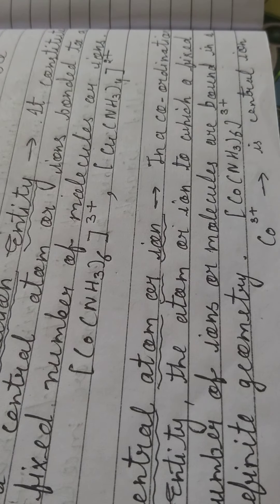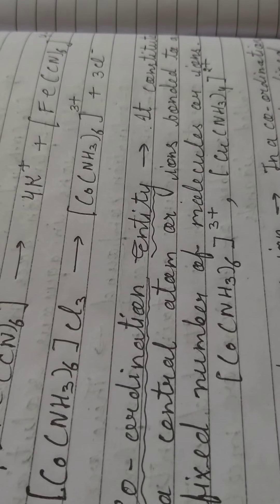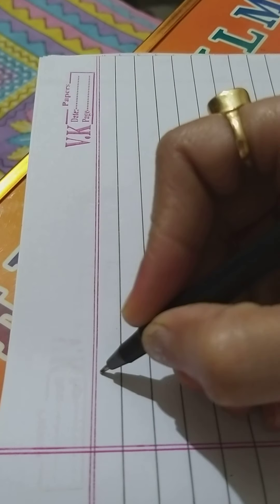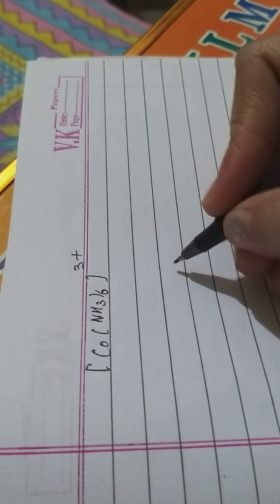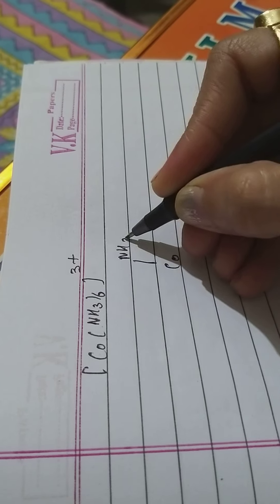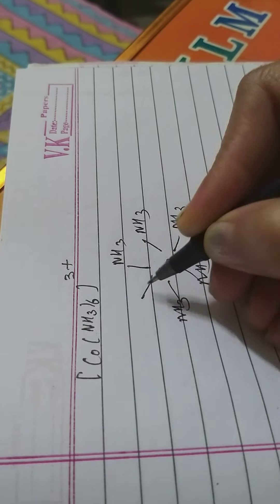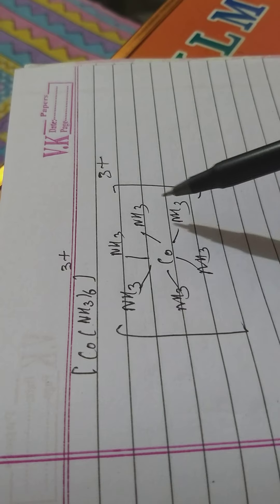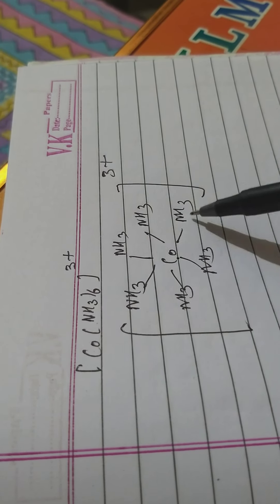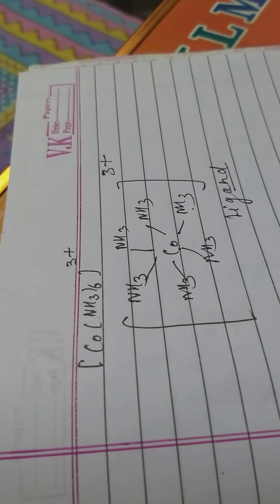The central atom is always present in the center. For example, in [Co(NH3)6]³⁺, cobalt is the central metal ion. Cobalt is surrounded by six ammonia molecules as ligands. In tomorrow's session we will study about the types of ligands in detail. That's all for today.